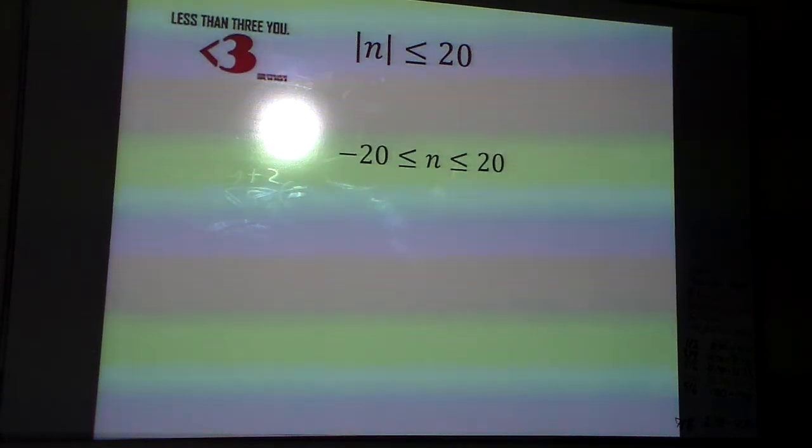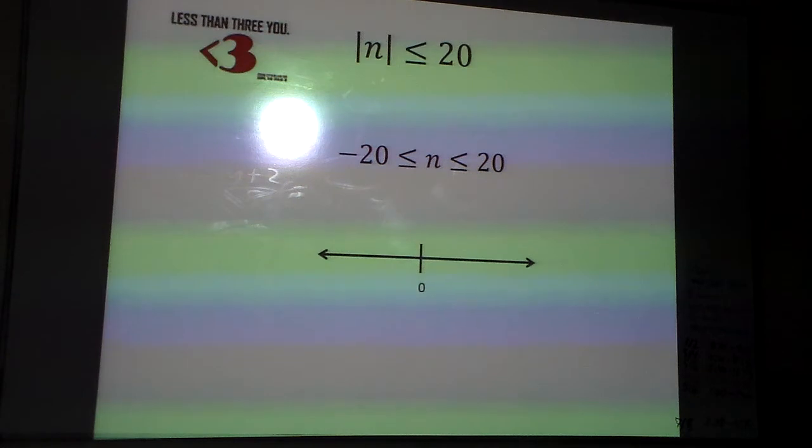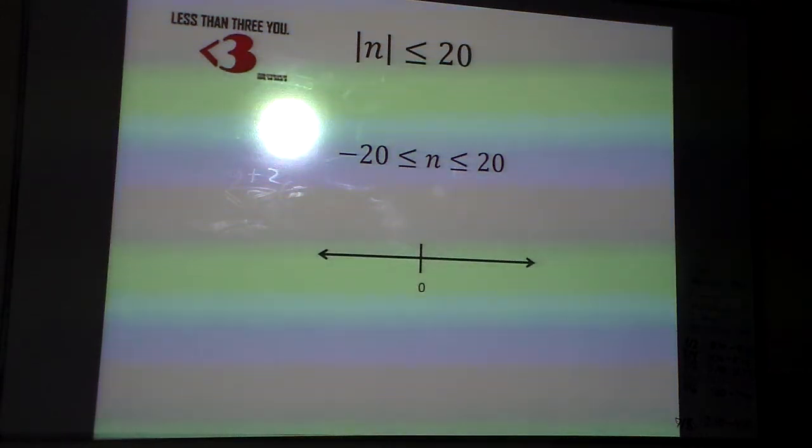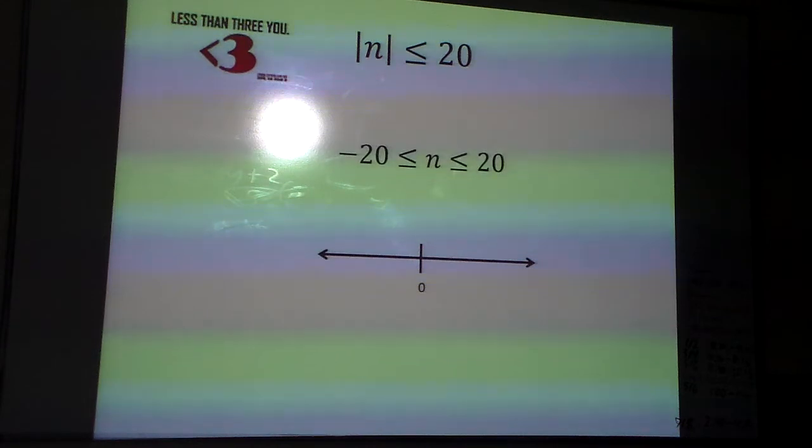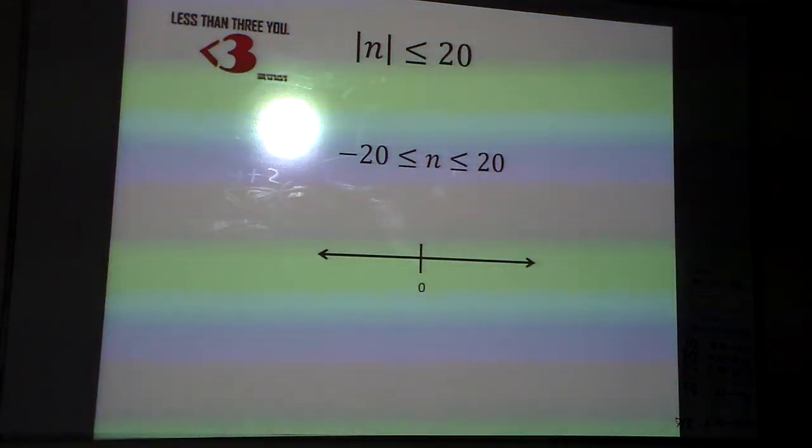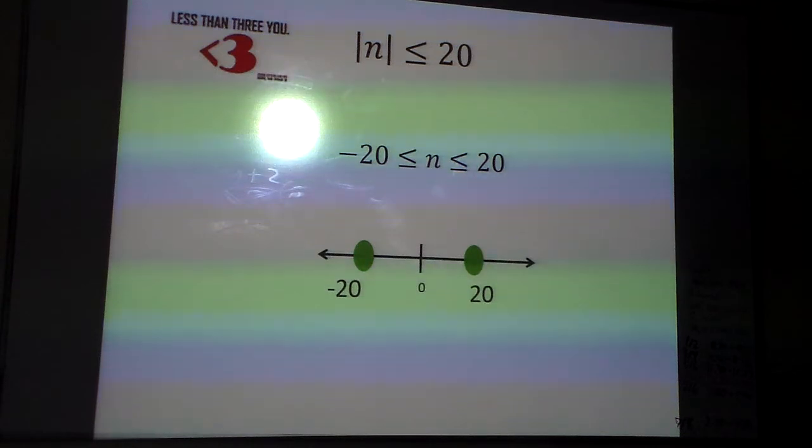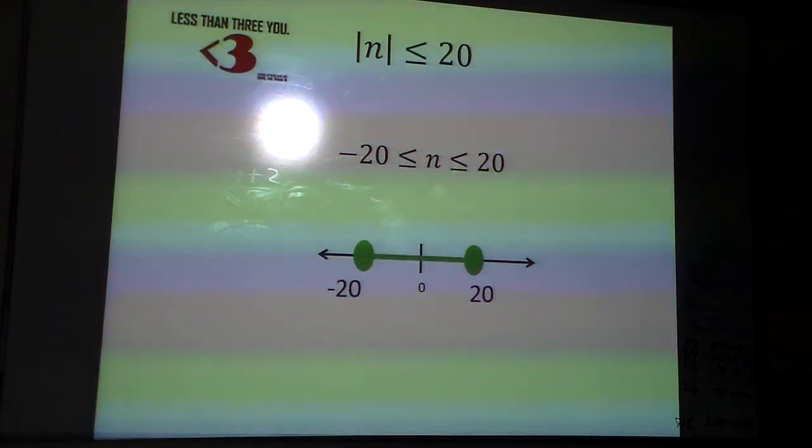And then when I go to graph it, the first question I ask is, notice there's a bar underneath that. That bar means what? Is 20 part of the solution or not? If there's a bar, is 20 part of the solution? Yes. So therefore, I put dots on the negative 20 and 20, and because I need values smaller, they're the numbers that are between them.